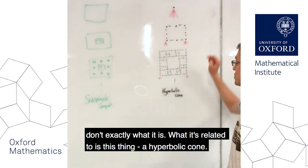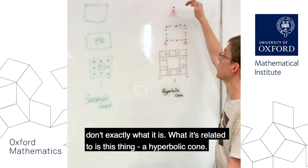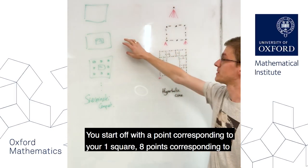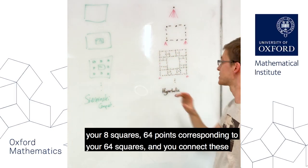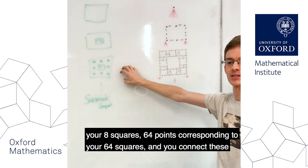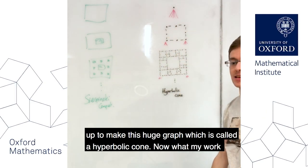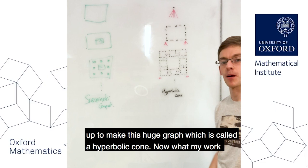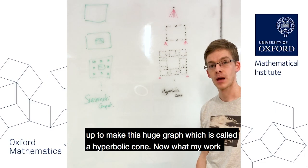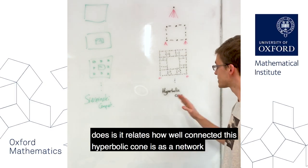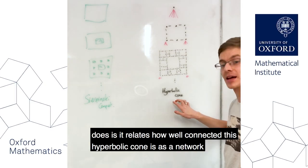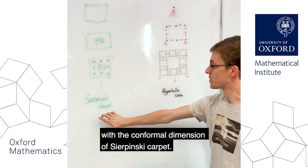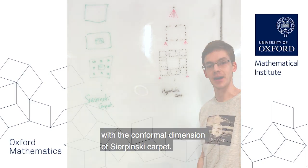What it's related to is a hyperbolic cone. You start off with a point corresponding to one square, eight points corresponding to eight squares, 64 points corresponding to 64 squares, and you connect these up to make this huge graph called the hyperbolic cone. My work relates how well connected this hyperbolic cone is as a network with the conformal dimension of the Sierpinski carpet.